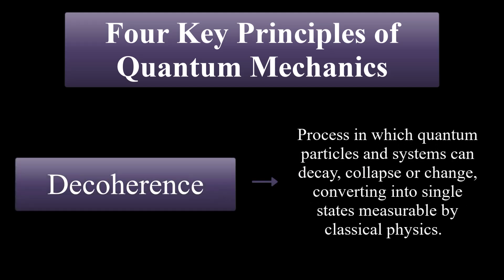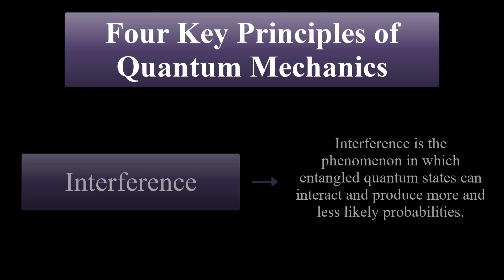Decoherence is the process in which quantum particles and systems can decay, collapse, or change, converting into a single state measurable by classical physics. Interference is the phenomenon in which entangled quantum states can interact and produce more and less likely probabilities.